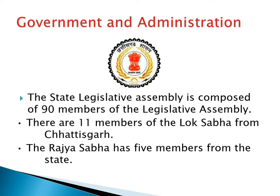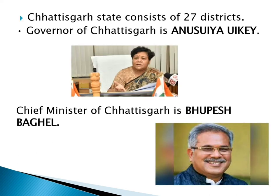Government and Administration: The state legislative assembly is composed of 90 members. There are 11 members of the Lok Sabha from Chhattisgarh and 5 members from the Rajya Sabha. Chhattisgarh state consists of 27 districts. At present, the governor of Chhattisgarh is Anusuya Uike and the chief minister is Bhupesh Baghel.